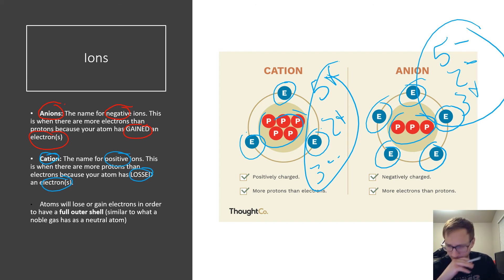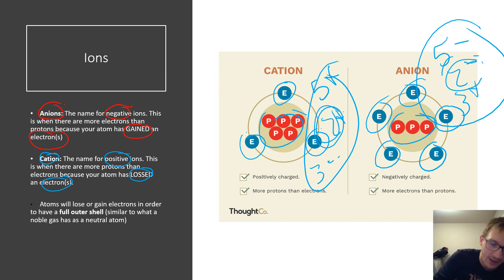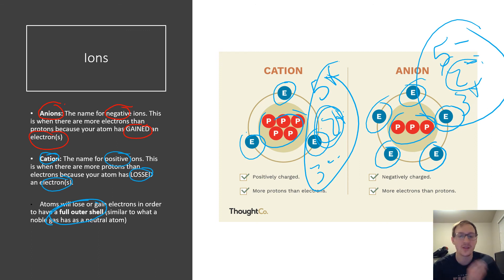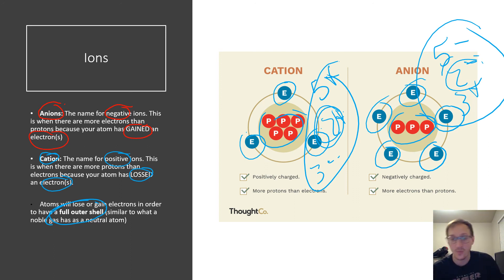Cations are always going to have a positive result; anions are always going to have a negative result. Atoms lose or gain electrons in order to have a full outer shell — we'll talk about that more when we get to valence electrons, Bohr models, and Lewis dot structures in the next video. For now, just know that anions and cations are formed because electrons are moving either away from or toward the atom.